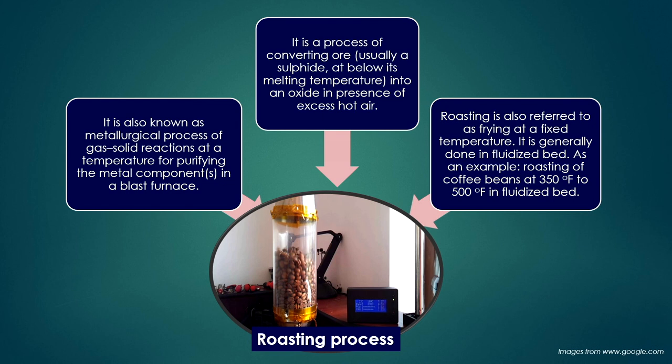Roasting is generally done in a fluidized bed. An example is roasting of green coffee beans, which are converted to browned coffee beans at around 350–500°F. The green coffee beans are roasted in the presence of hot air at this temperature and become dried brownish coffee beans, which are then ground and mixed with milk to produce ready coffee.